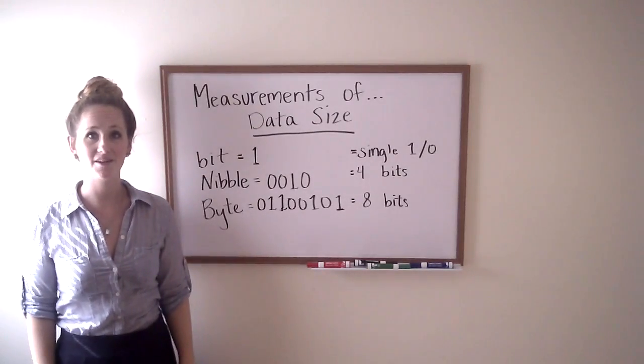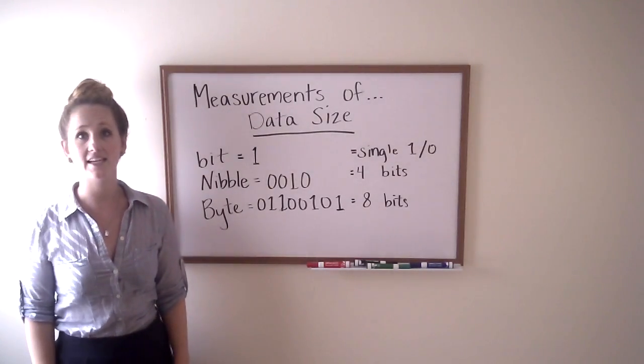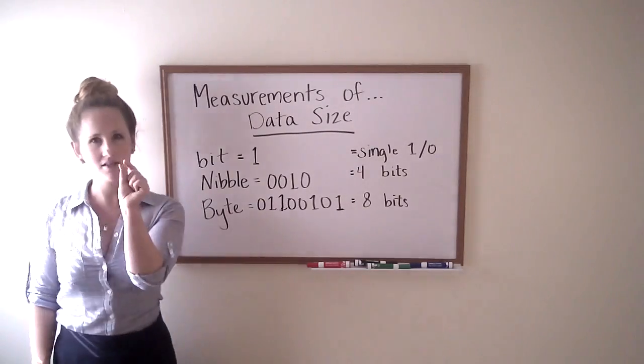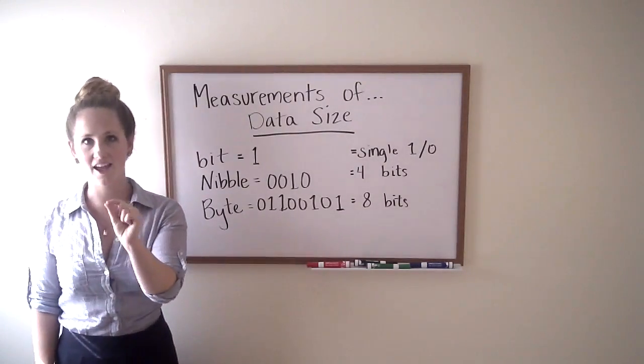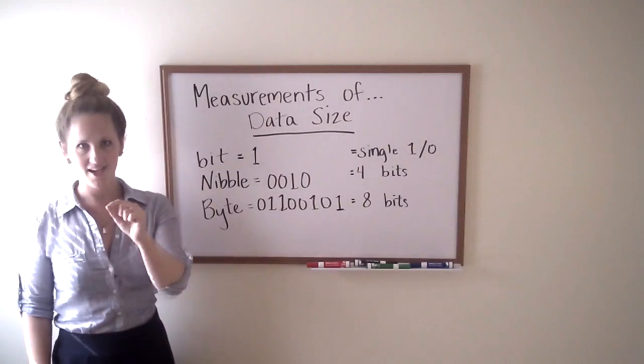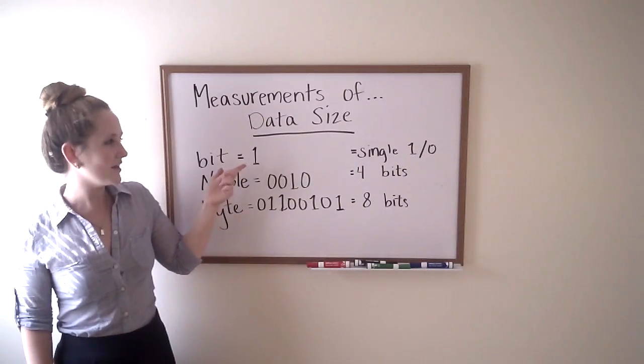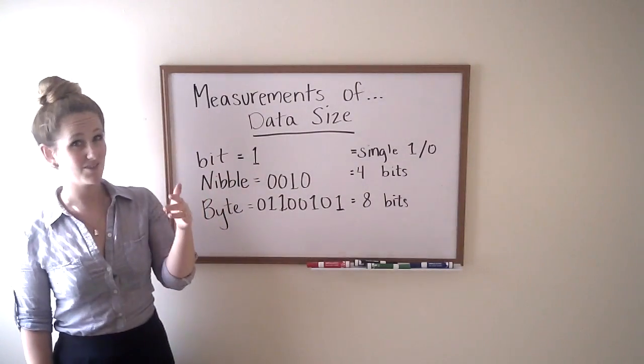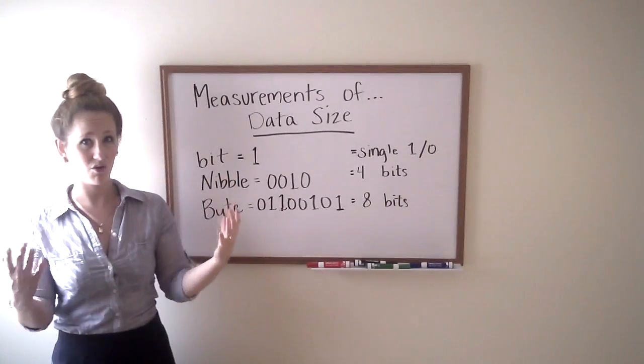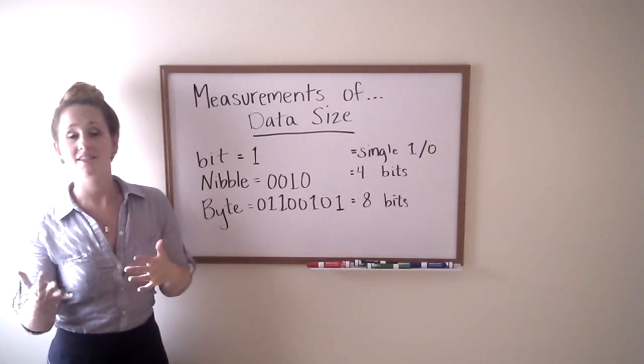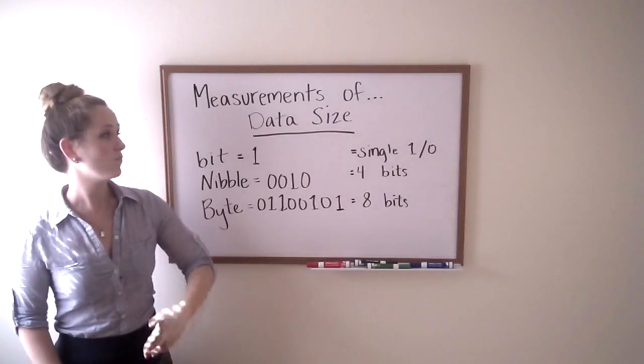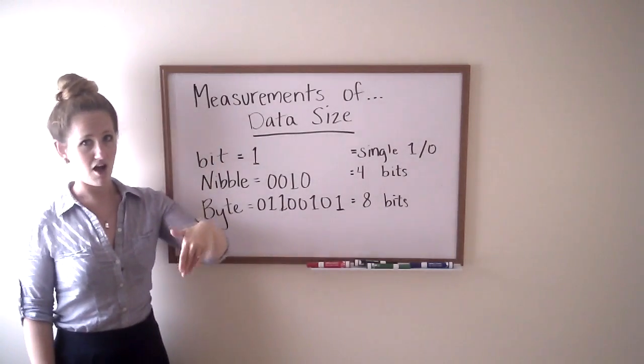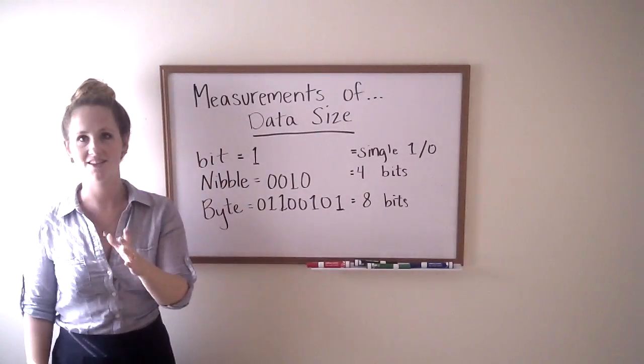Hi, it's Brianna from FreeCodeCamp. Today we're going to be talking about data size. The smallest size of data you can possibly have is called a bit. I wrote a one here, that's an example of a bit. It can either only be a one or a zero. It goes back to that binary we were talking about. One meaning on, zero meaning off. That's a bit.